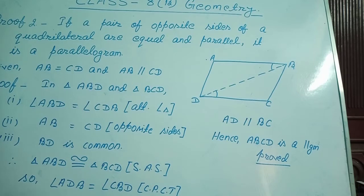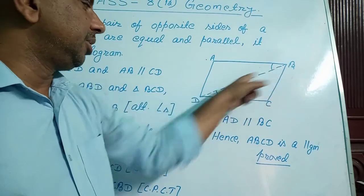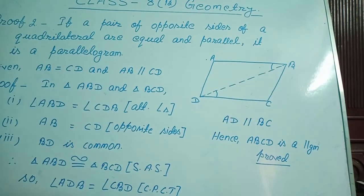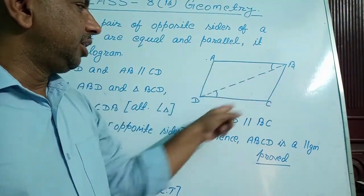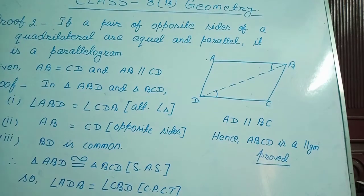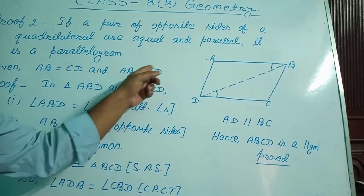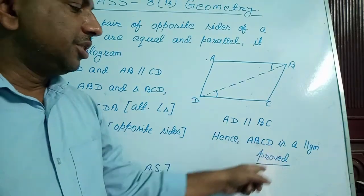Then I used CPCT — corresponding parts of congruent triangles — because if two triangles are congruent, the remaining corresponding parts are also equal. From CPCT I wrote angle ADB equal to angle CBD. These two angles became equal. Since these two are alternate angles, we can say AD is parallel to BC. So AB is parallel to CD (given) and I proved AD is parallel to BC. Therefore ABCD is a parallelogram.